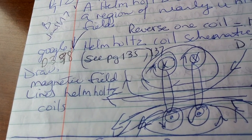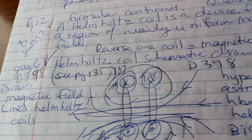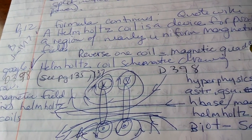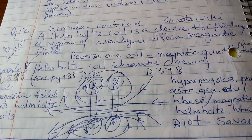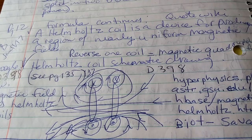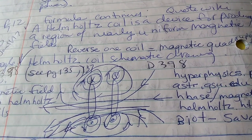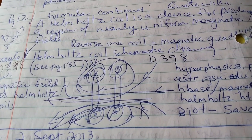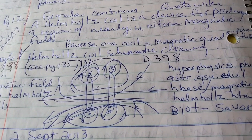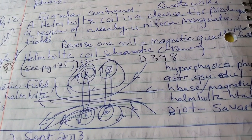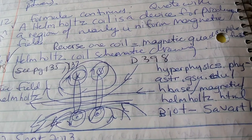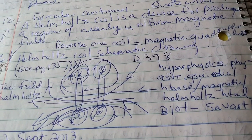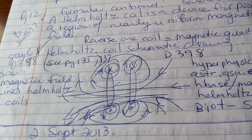This is a quote from Wikipedia: the Helmholtz coil is a device for producing a region of nearly uniform magnetic fields. If you reverse one coil, it equals a magnetic quadrupole field.